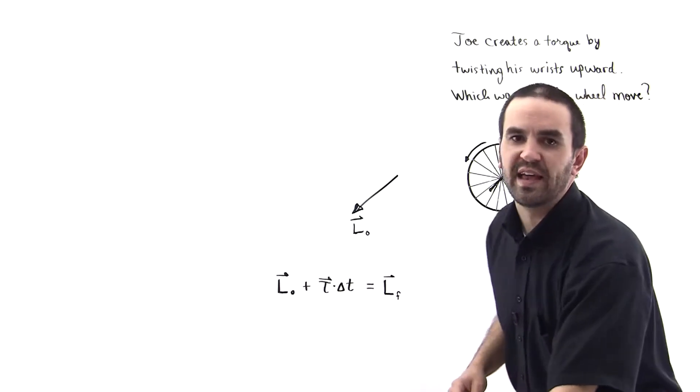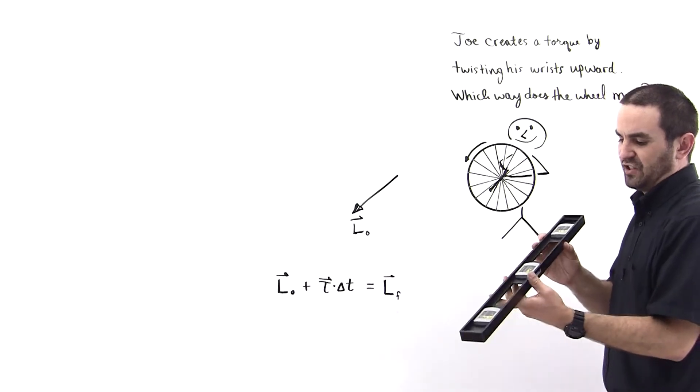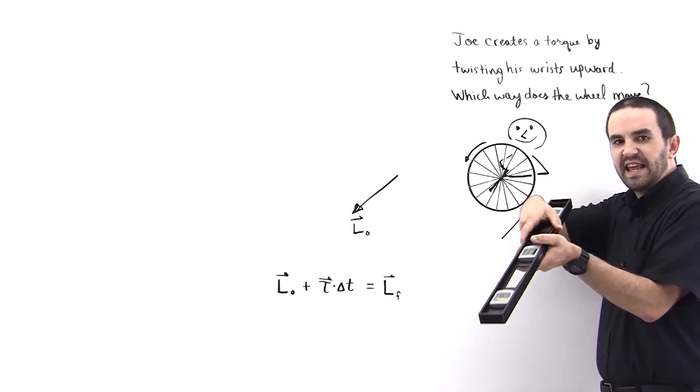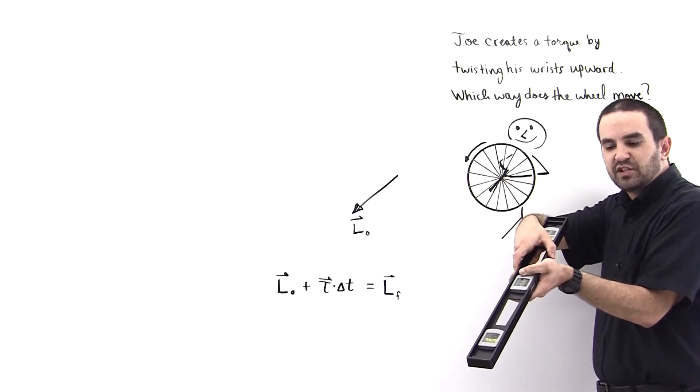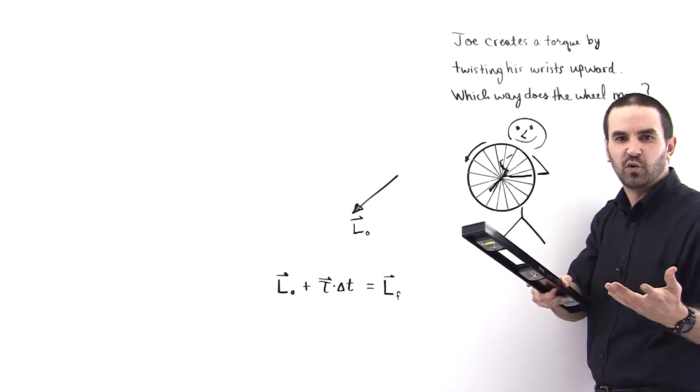Okay, so to do that, take your pencil on the exam. I'm going to take this bar because it's just easier for demonstration, for you guys to see what's going on. And notice he takes his wrist and he puts a torque like this. He twists his wrist upward. So what direction is that torque?